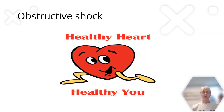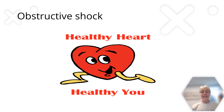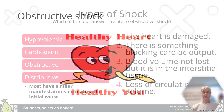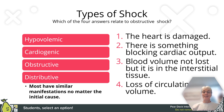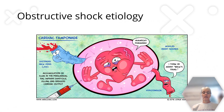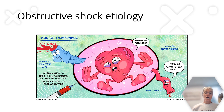Obstructive shock is very different from cardiogenic shock — the heart itself is healthy, but something is preventing it from generating proper cardiac output. This can be from a tension pneumothorax, a PE, or pulmonary hypertension. The number one cause of obstructive shock is actually cardiac tamponade: so much fluid surrounds the heart that it pushes on it so hard the heart can't fill and therefore can't squeeze out. With cardiac tamponade, you'll see distending neck veins, muffled heart sounds, and hypotension.